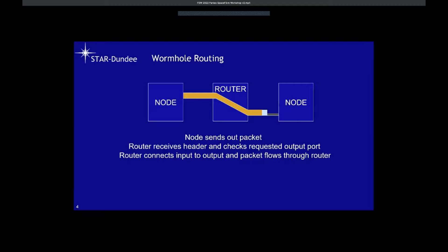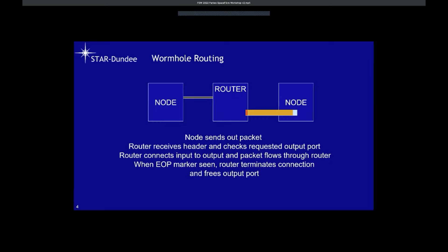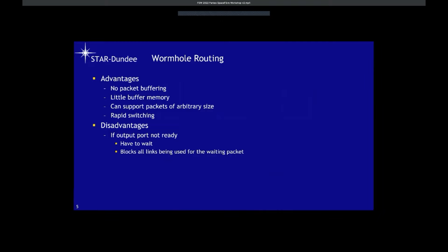The input port and output port are connected and the packet continues to flow through the router until the end-of-packet marker goes through the output port and frees it. After that, the output port can be used by another packet. The advantages of wormhole routing are that it doesn't need packet buffering, uses very little buffer memory, can support packets of arbitrary size, and switching can be rapid. The disadvantage is that if the output port is not ready, all links used for the waiting packet are blocked.